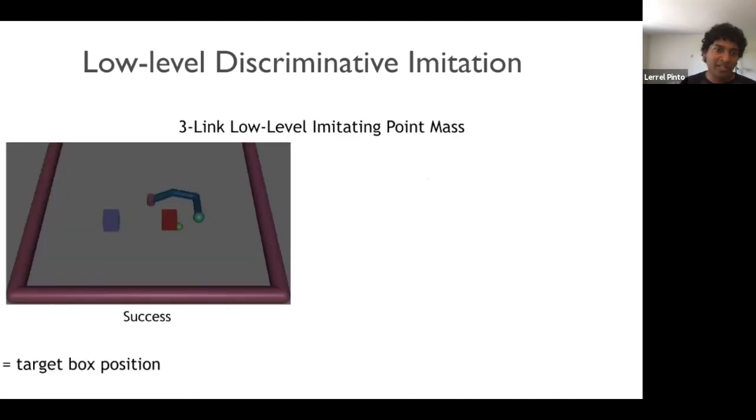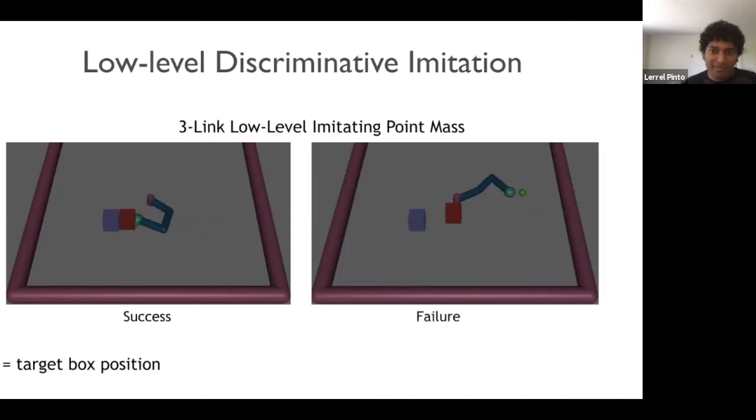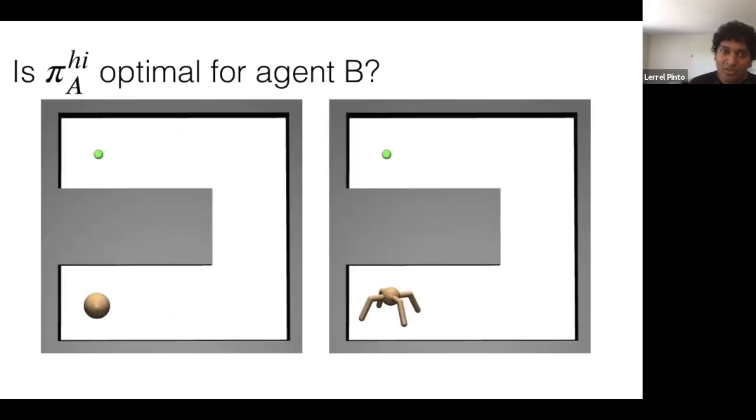Now we can also have a look at other tasks as well. So this is a three-linked robot, which is agent B, imitating a point mass. And in this case, the point mass is agent A. And over here, it succeeds most of the time again, but then sometimes it fails. So why is this happening? Why does it fail a few times?